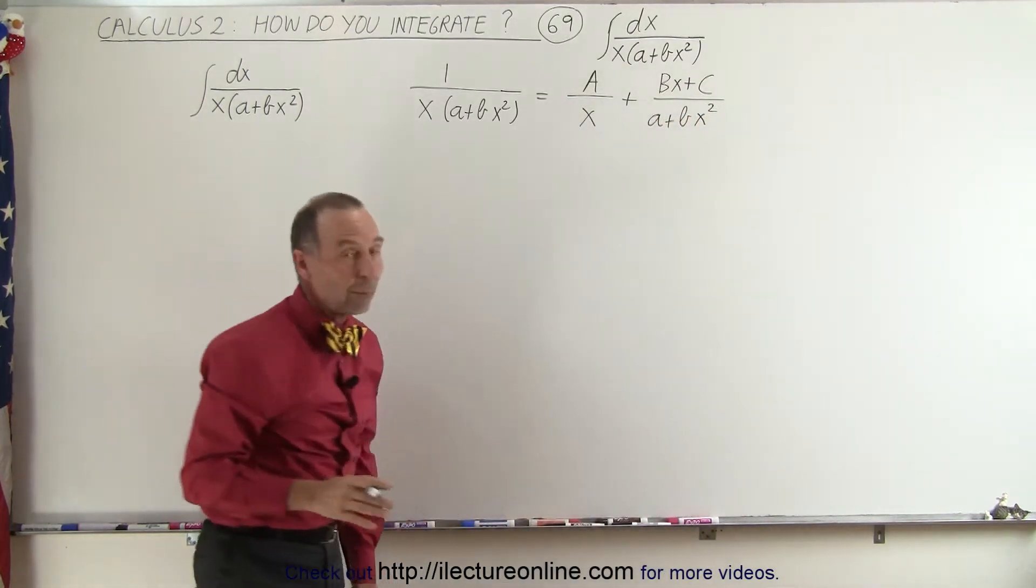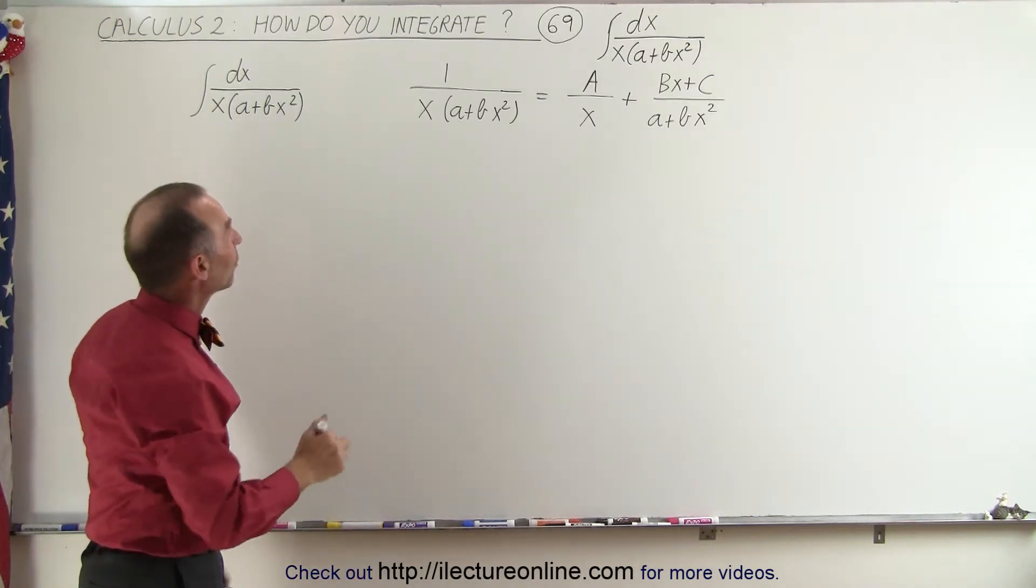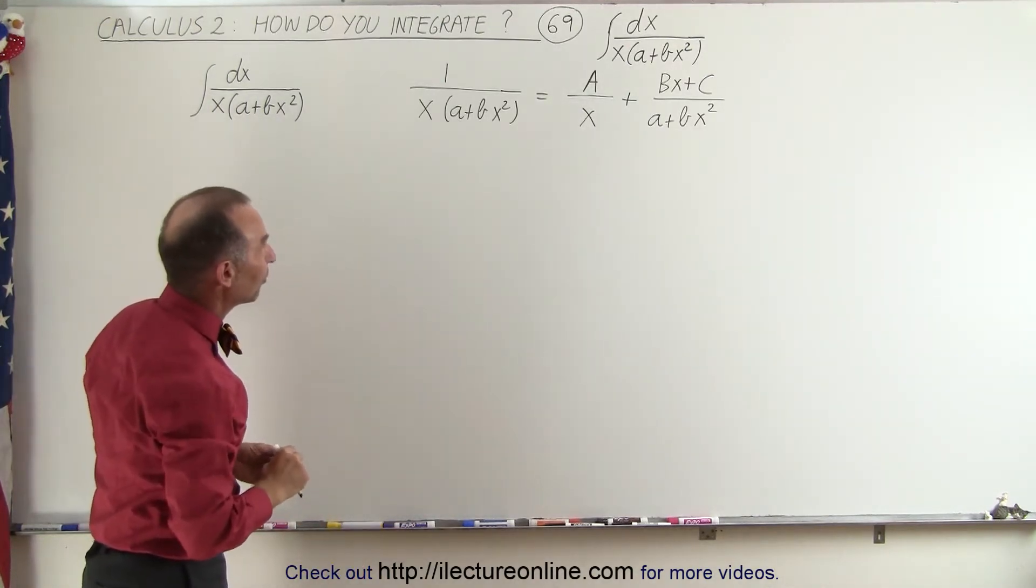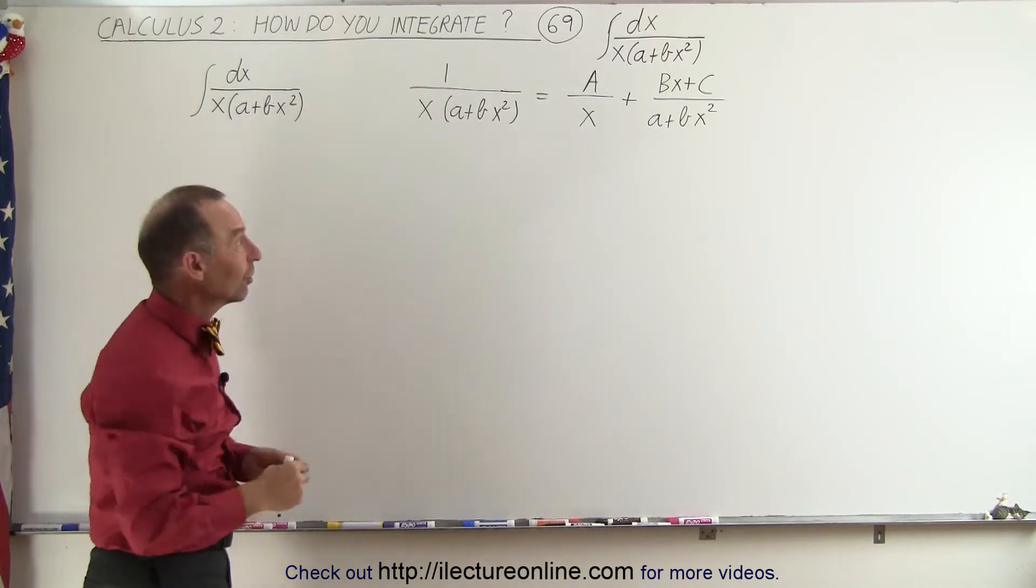And now all we have to do is find out what a, b, and c are so we can rewrite this as the sum of two fractions instead. Hopefully then both fractions are much more easily integrated.